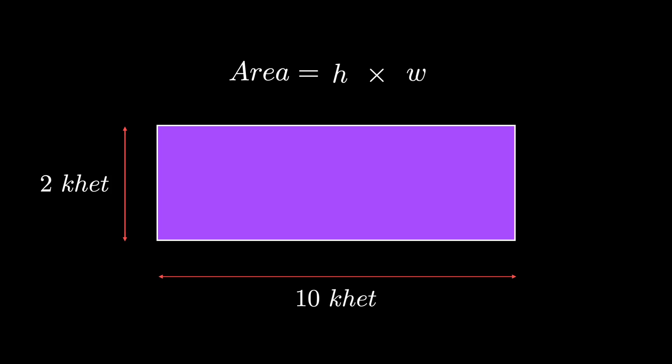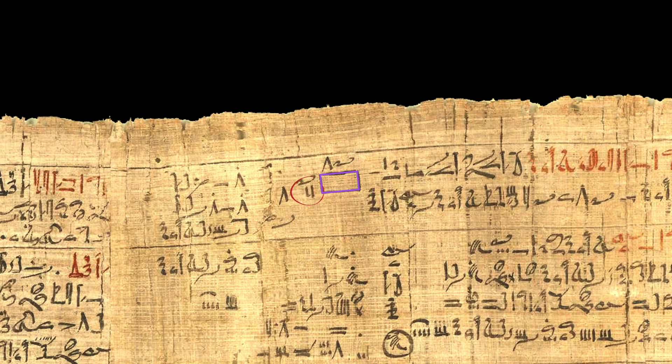And we can actually see this when we zoom into the papyrus. Where this is the symbol for the number 2, which is basically two vertical bars, this is the symbol for the number 10, and these are the symbols for ket.